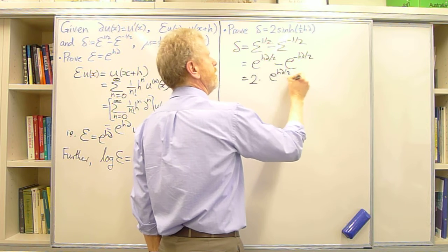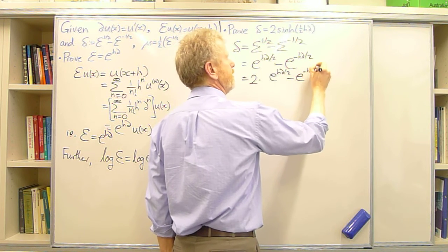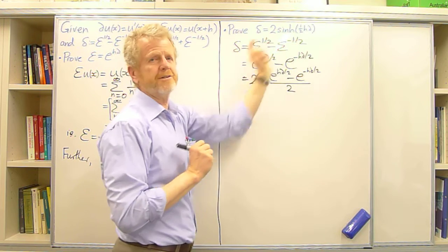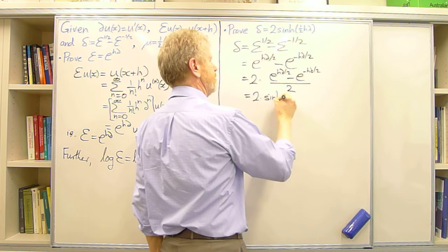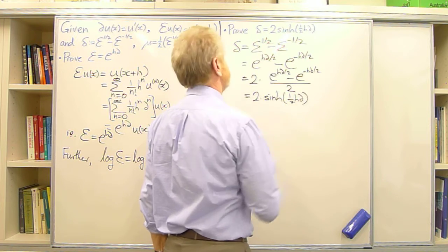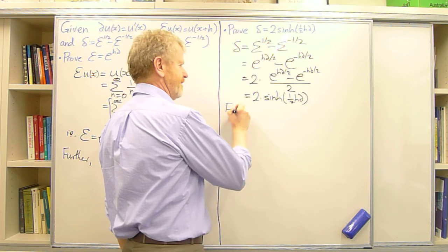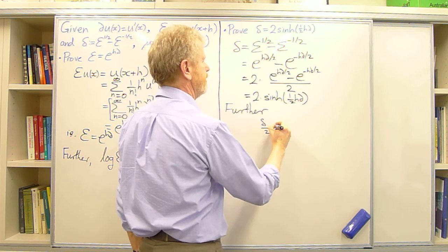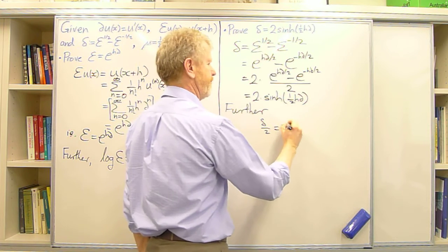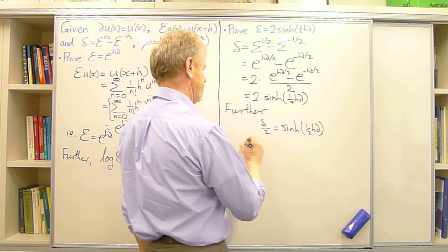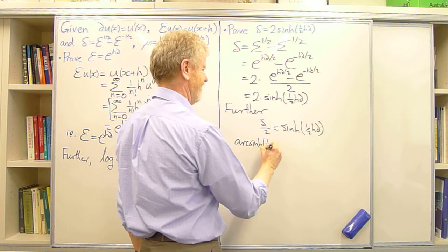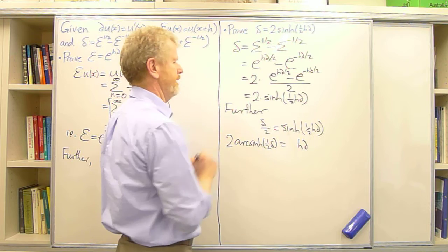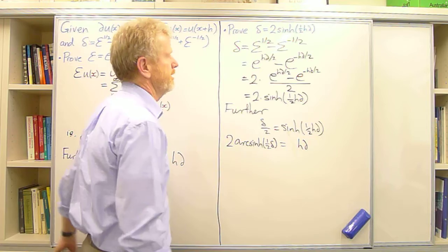Multiplying and dividing by 2, we recognise that this is just the definition of hyperbolic sine, so delta equals 2 sinh(hD/2), as required. Rearranging for hD: dividing by 2 gives delta/2 = sinh(hD/2), taking arcsinh of both sides gives hD/2, and multiplying by 2 gives hD = 2 arcsinh(delta/2). That is also very useful.